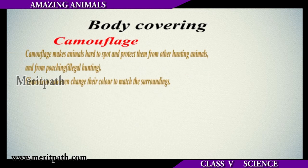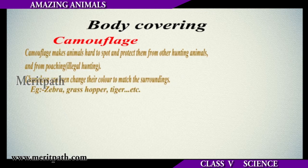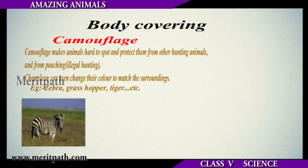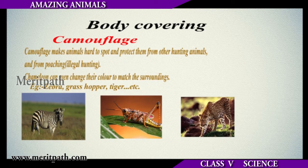Some animals are called camouflaging animals. Examples of such animals are zebra, grasshopper, leopard, etc. Camouflage makes animals hard to spot and protects them from hunting animals and also from poaching.